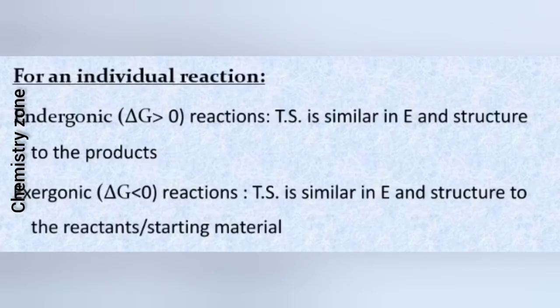Hammond's Postulate for an individual reaction and for a series of analogous and related reactions: an individual reaction means a single reaction. Hammond's Postulate has two types. A series of analogous related reactions means one or more similar reactions being compared.